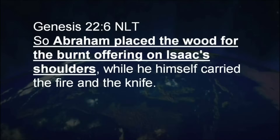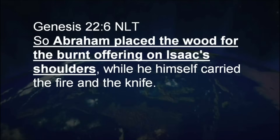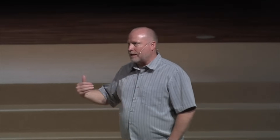Not only that, Isaac carried the wood he was supposed to be killed upon on his shoulders. Look at verse 6: 'Abraham placed the wood for the burnt offering on Isaac's shoulders while he himself carried the fire and the knife, and the two of them walked on together.' This is perfect typology — as Christ carried His own cross. Here Isaac carries the wood he'll be killed upon, and 2,000 years later Jesus Christ carries the wood He'll be killed upon.